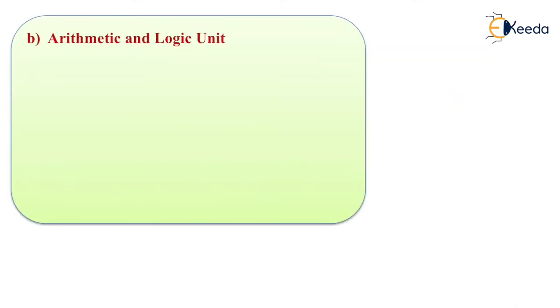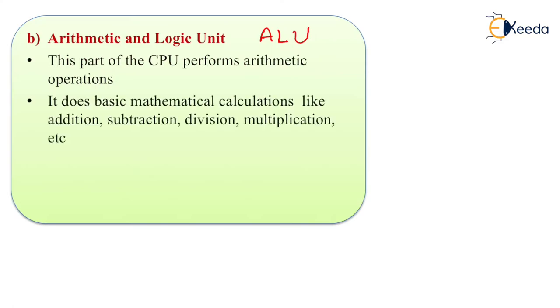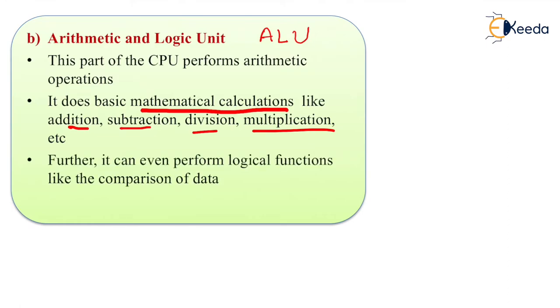Second type is ALU that is arithmetic and logic unit. This part of the CPU performs arithmetic operations that can be any subtraction, multiplication, addition, division, etc. Any mathematical calculation can be performed from the ALU. As well as it can perform some logical functions like comparison of data.